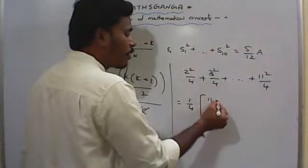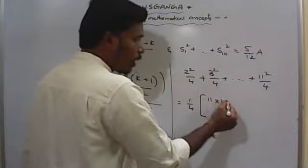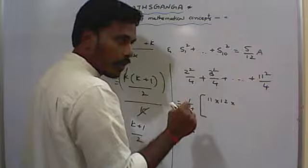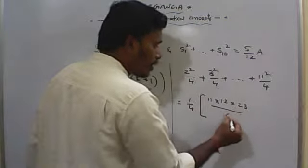Sum of the squares of the first 11 natural numbers is nothing but n(n+1)(2n+1)/6. 11×12×23/6.